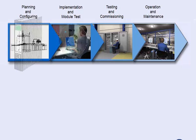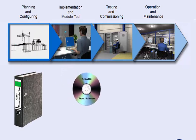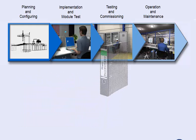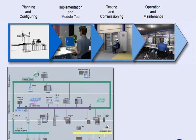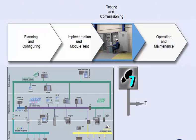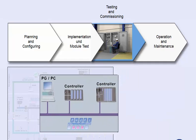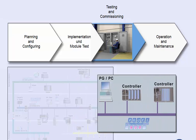The commissioning staff receives the plant software from the project planner or the programmer and must commission the plant safely, efficiently and in due time. The SIMATIC software gives you optimum support in the testing and commissioning phase with practical testing tools and diagnostics functions. We show you the commissioning process for a plant component as an example and introduce you to the SIMATIC manager functions.